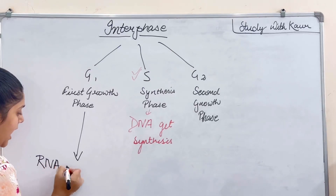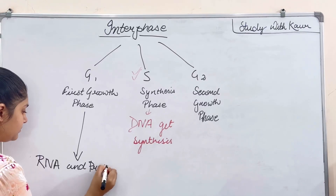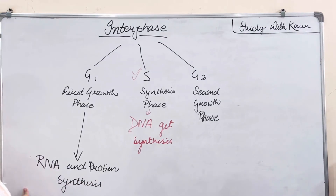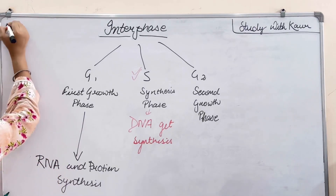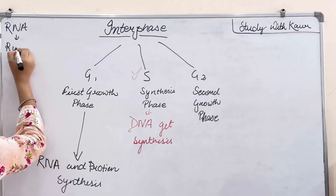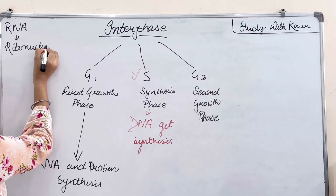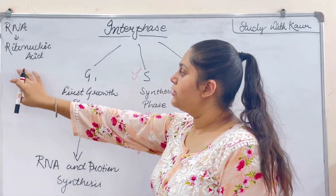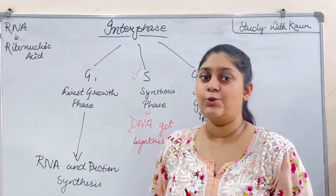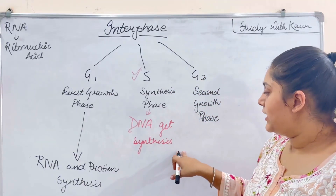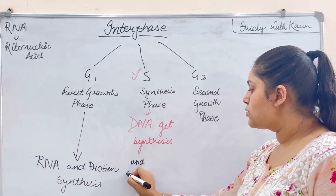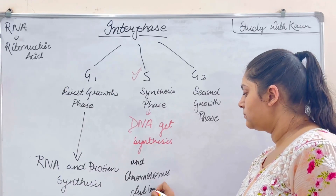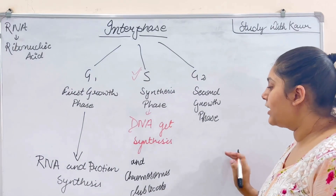In the first growth phase G1, RNA and protein are synthesized. RNA stands for ribonucleic acid. In S phase, DNA gets synthesized and chromosomes duplicate. And again in G2 phase, RNA and protein are synthesized.